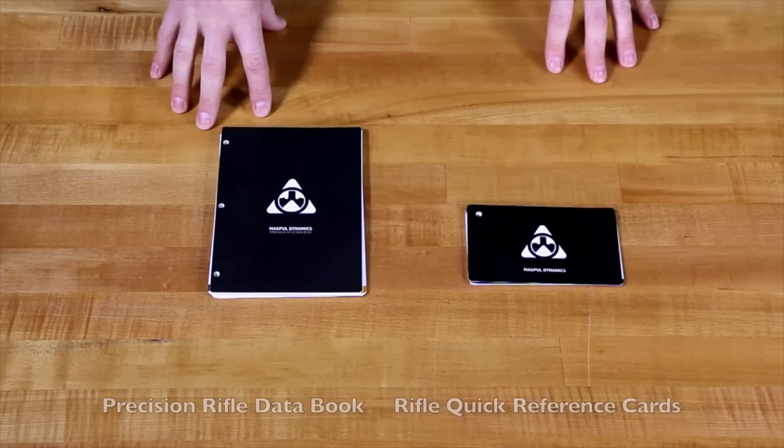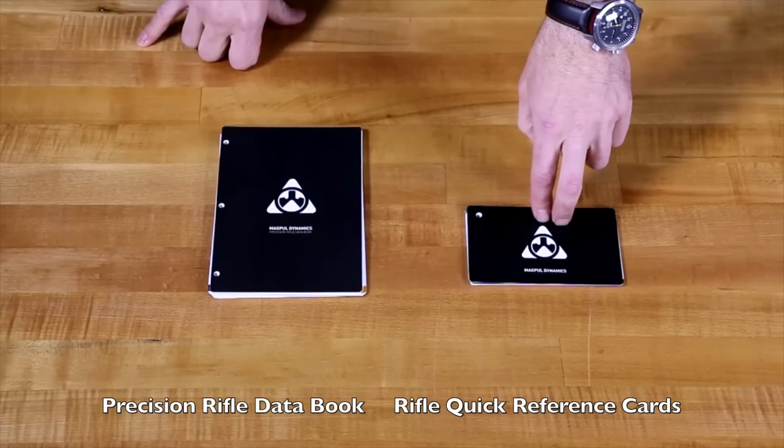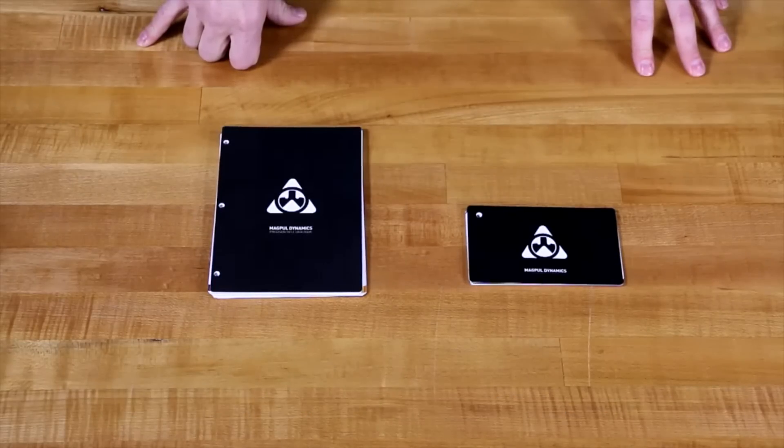The first two installments in the series are the Magpul Dynamics Precision Rifle Data Book version 2.0 and the Magpul Dynamics Precision Rifle Quick Reference Card.